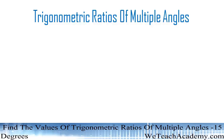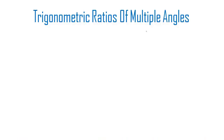Hey guys, welcome to vdchacademy.com. In this presentation we are going to deal with trigonometric ratios of multiple angles, and in this section we are going to derive the value for sine and cosine of the multiple angle 15 degrees. In order to find these, let us assume a equal to 15 degrees.